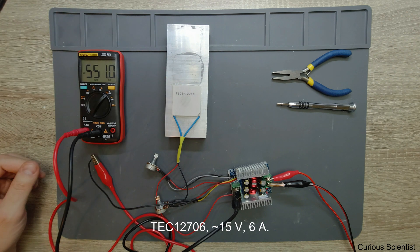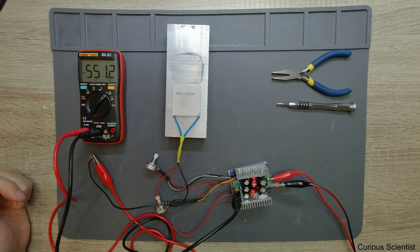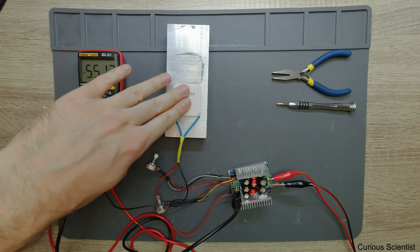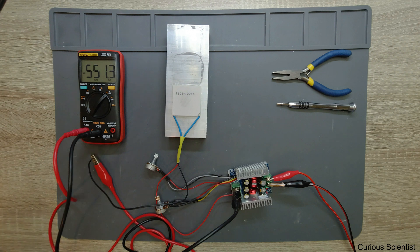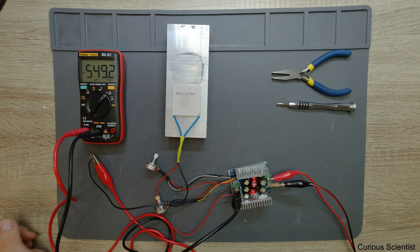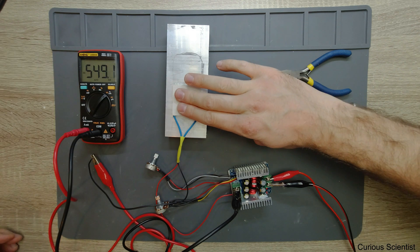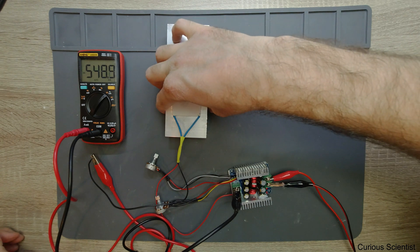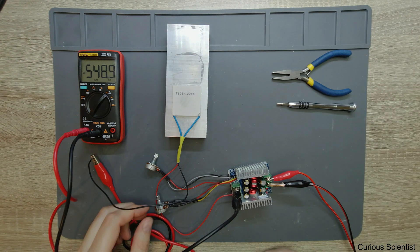I'm measuring the current running through this circuit with this Peltier in it. I set the power supply to 14 volts and now we can see that half an amp is running through this device. I can feel it's slightly cold and the heatsink is getting warmer on the other side.